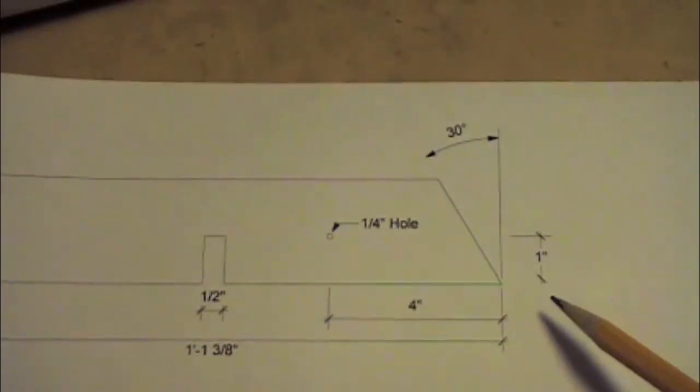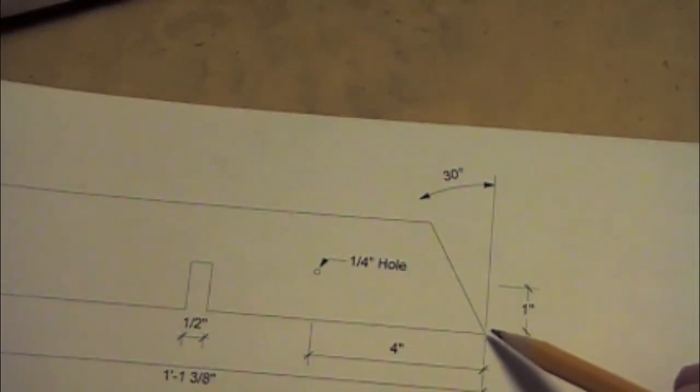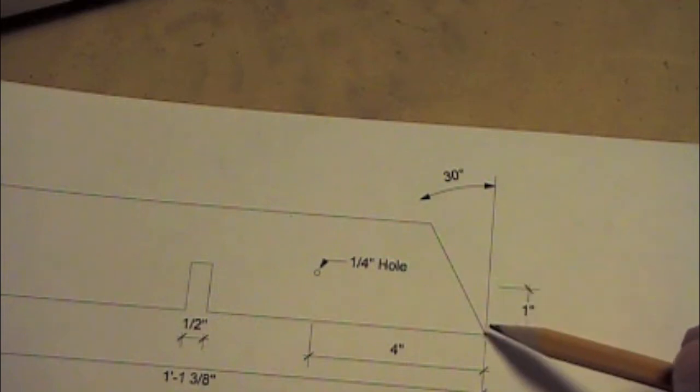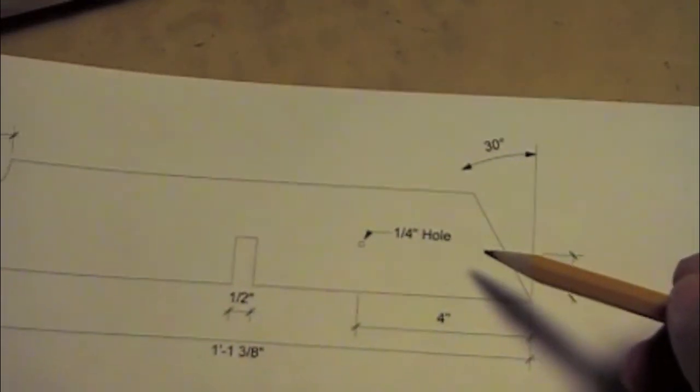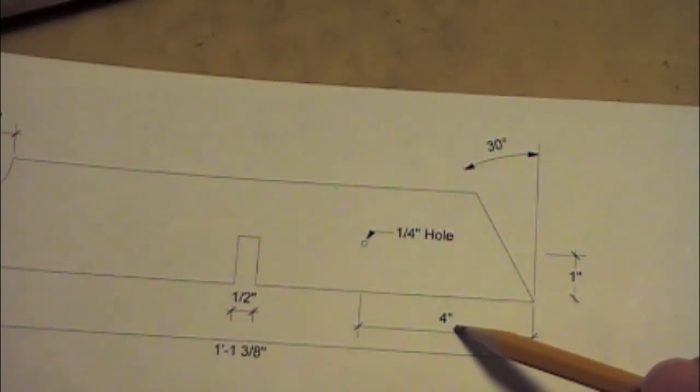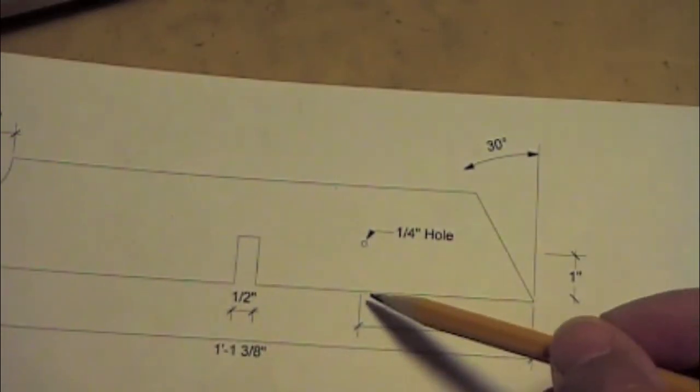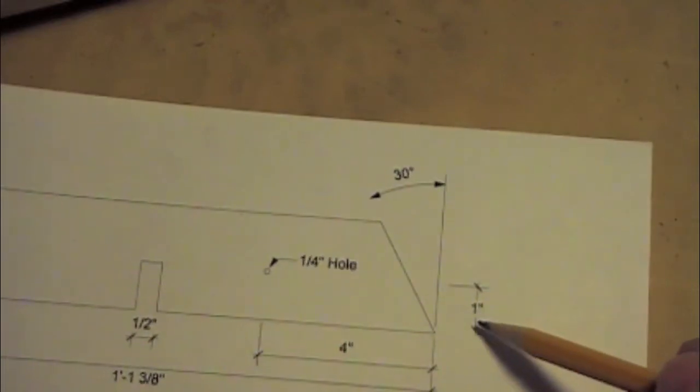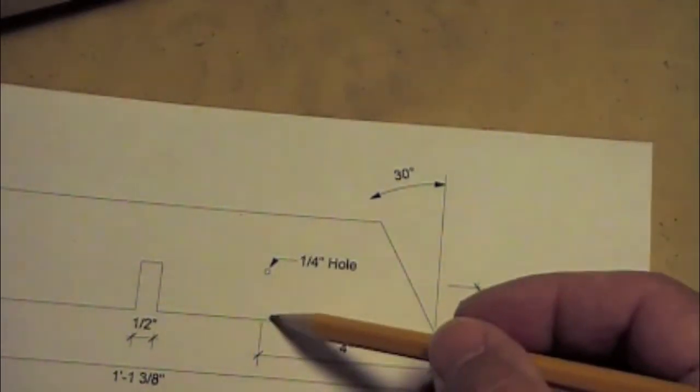This drawing gives us our measurements. We have a thirty degree angle cut here. We have a hole that needs to be four inches from the end of the point and one inch high from the bottom.